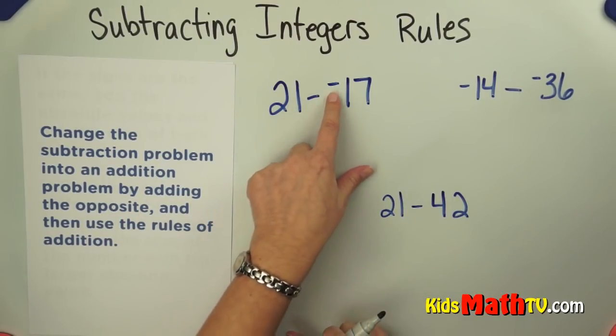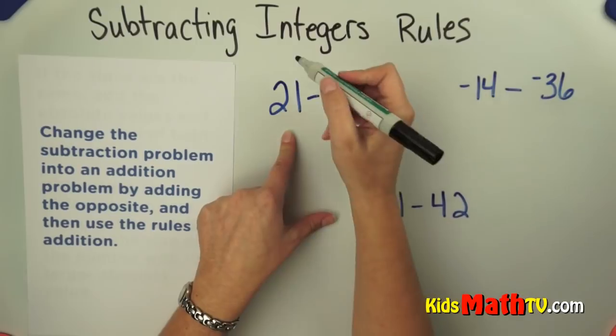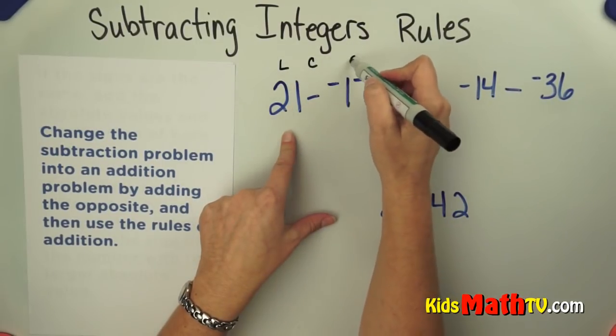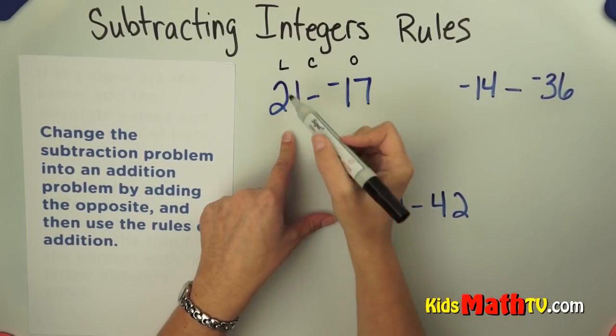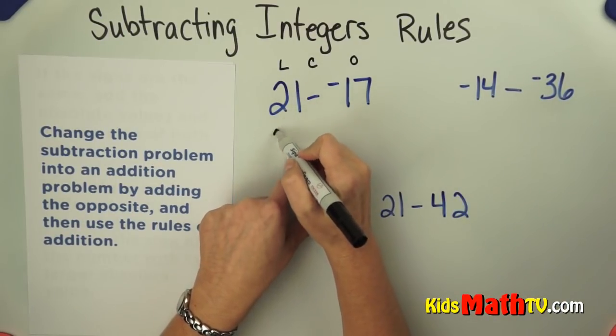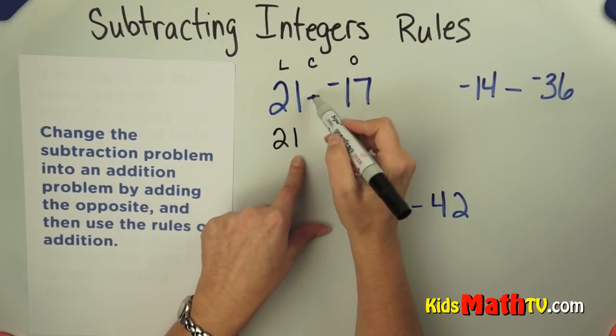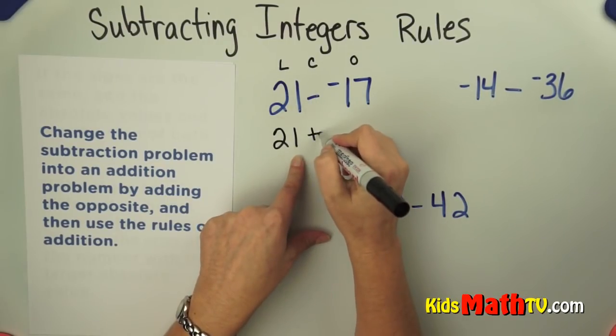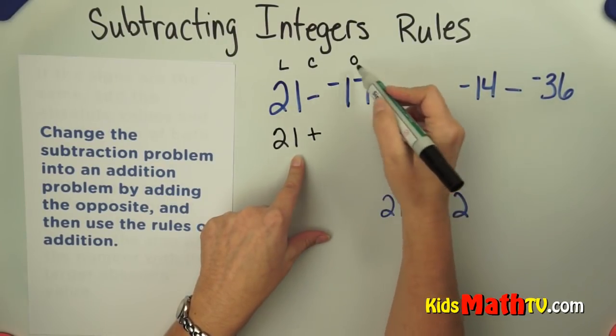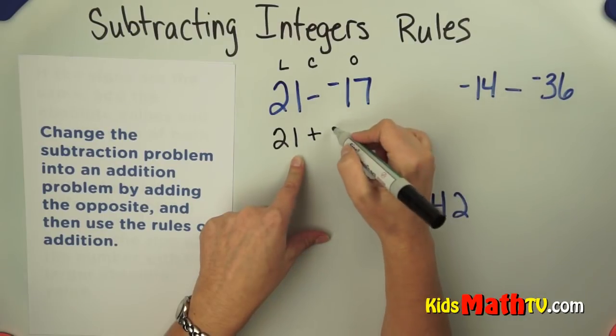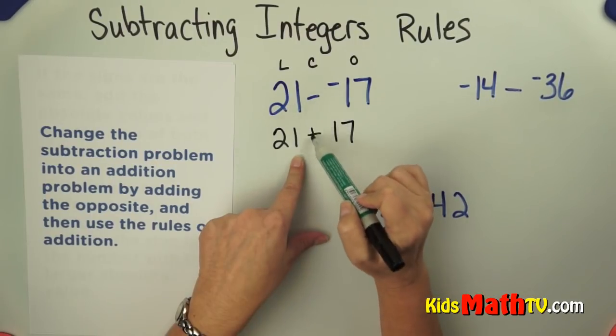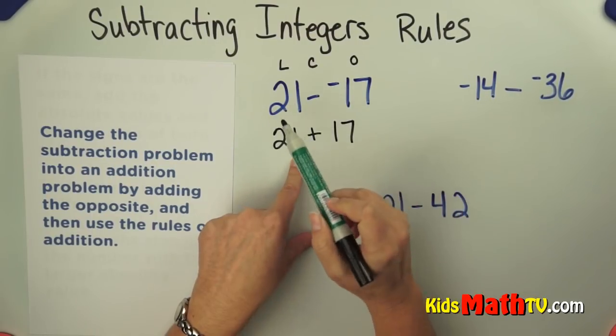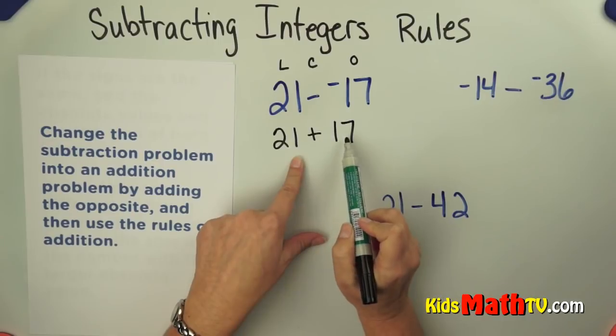21 minus negative 17. I like to call this leave change opposite or LCO, something you can remember. We're going to leave the first number, 21, change the subtraction to addition, and then use the opposite. The opposite of negative 17 is 17. So this becomes 21 added to 17.